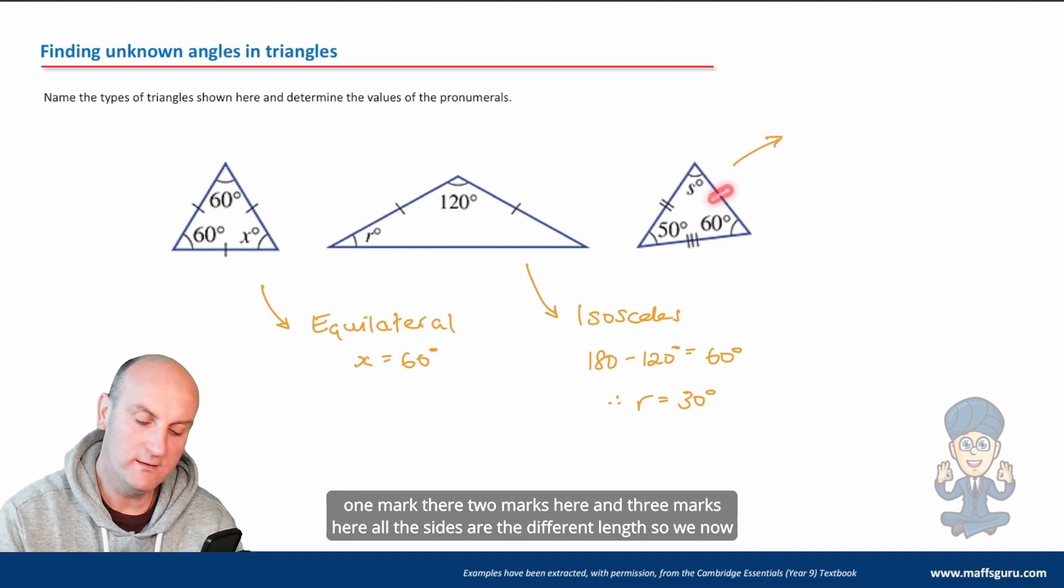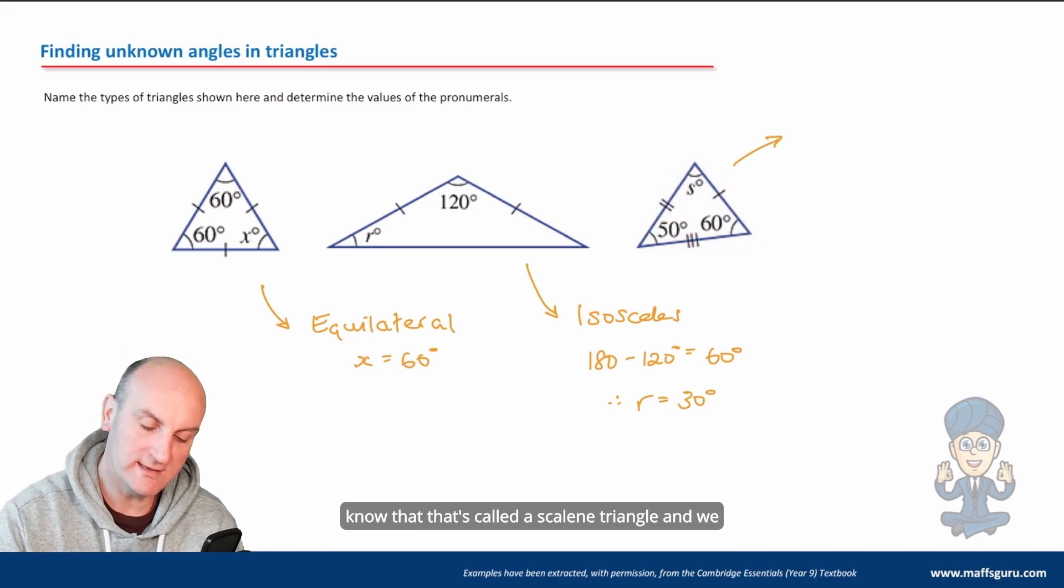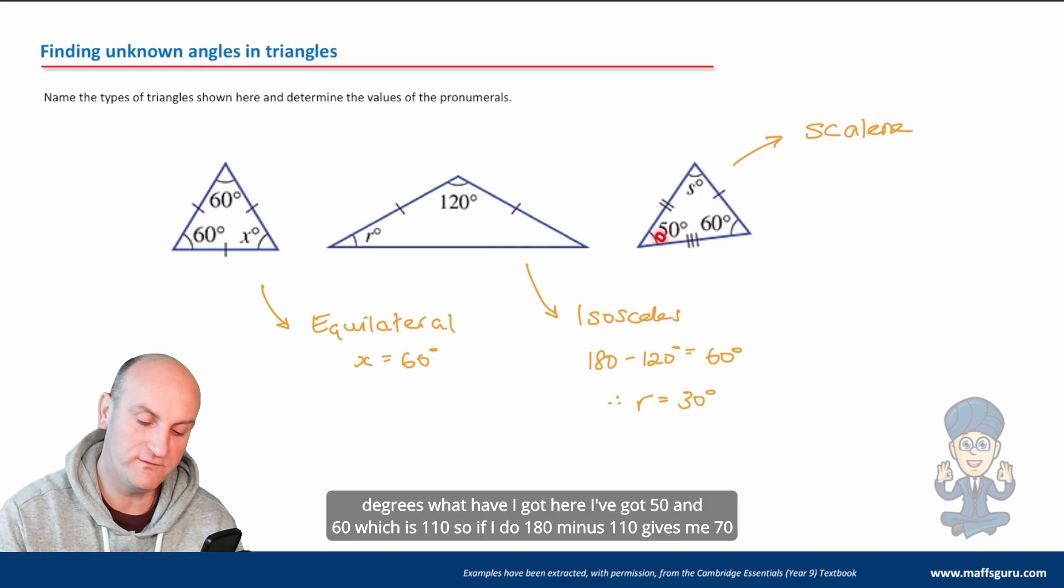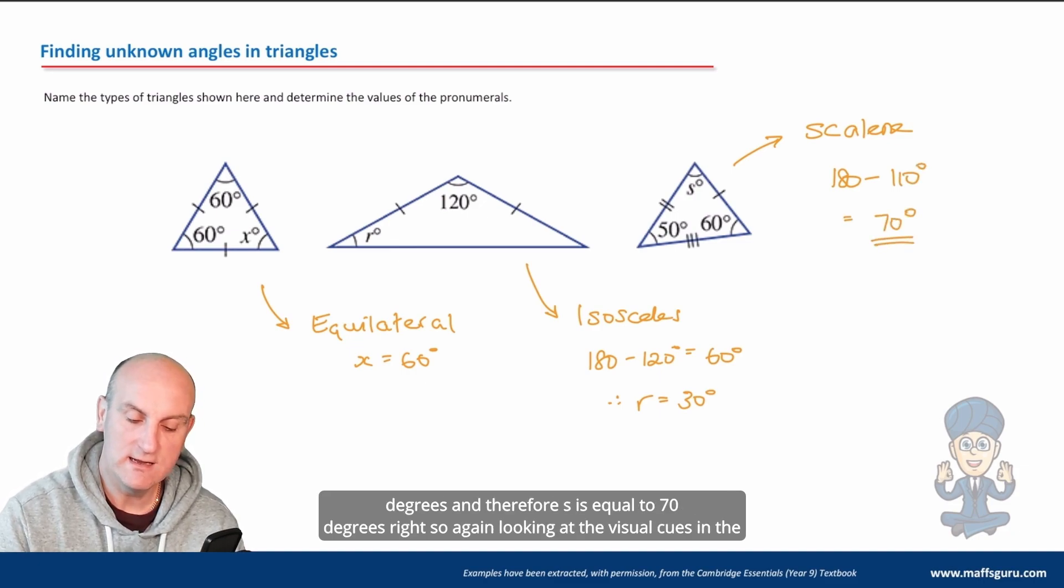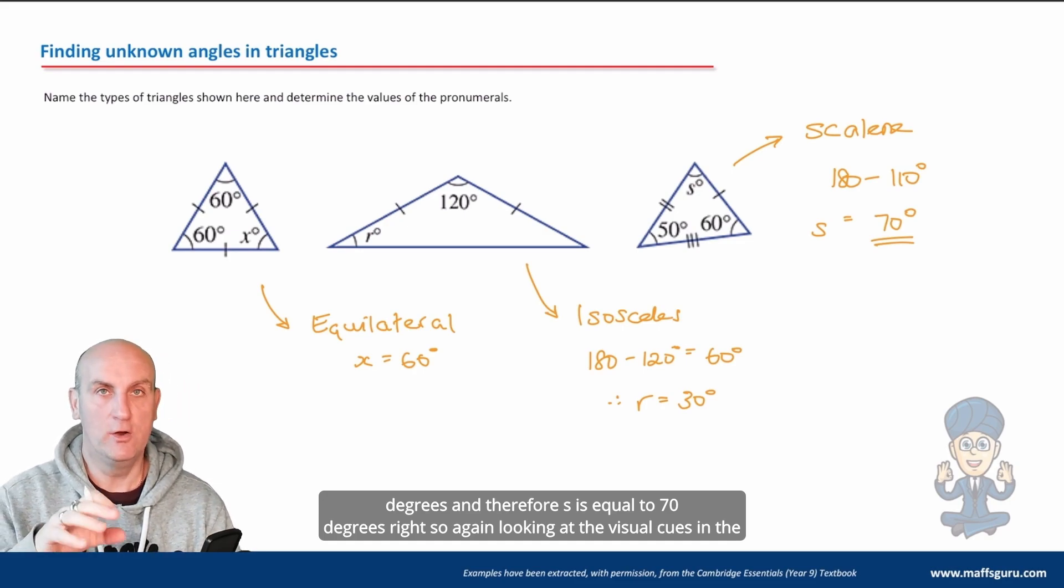What about this triangle here? Well we got one mark there, two marks here, and three marks here. All the sides are different lengths, so we now know that that's called a scalene triangle, and we know that all the angles added together must be 180 degrees. What have I got here? I've got 50 and 60, which is 110. So if I do 180 minus 110 gives me 70 degrees, and therefore s is equal to 70 degrees.